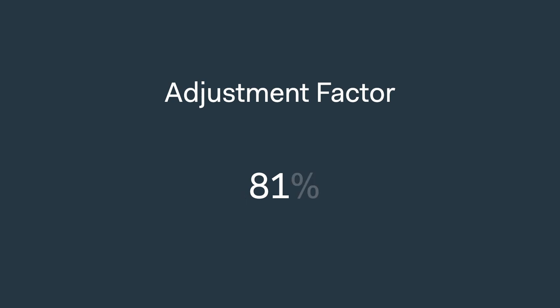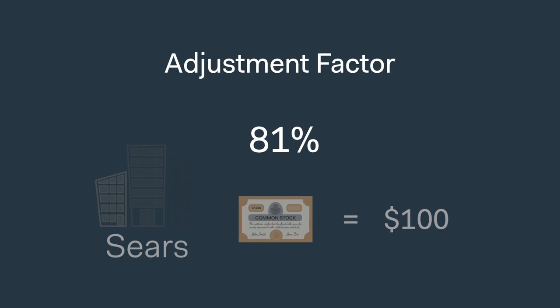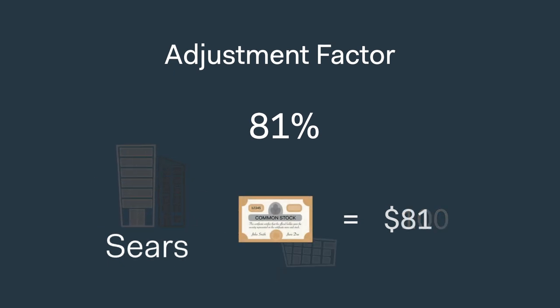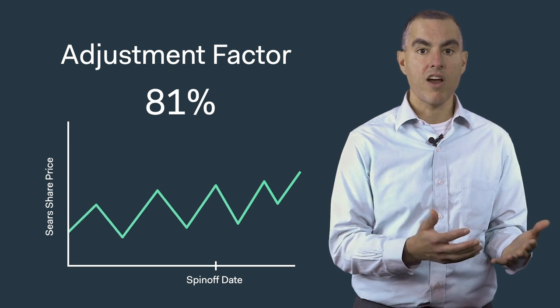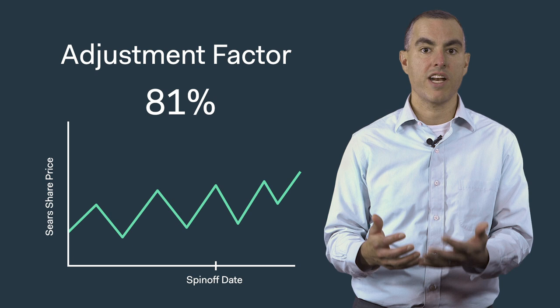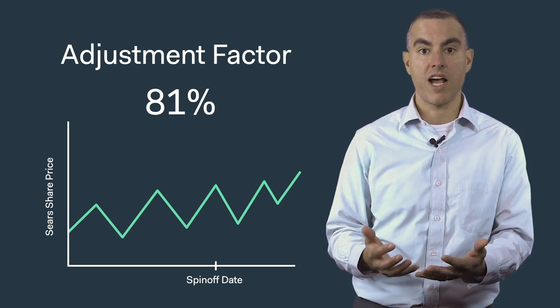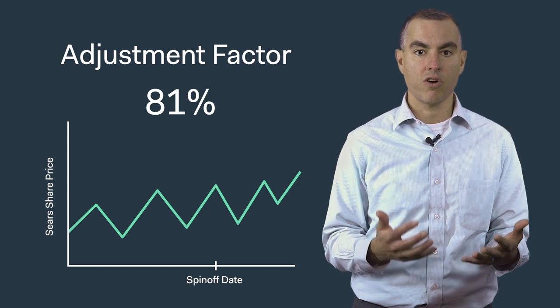Next, we will discuss spin-offs. When a spin-off takes place, such as the Sears spin-off of Land's End that we discussed in our earlier video, the company will typically report an adjustment factor. Here we see how this adjustment factor is reported in the Bloomberg terminal. This adjustment factor represents the value expected to remain in the company that originates the spin-off. If the adjustment factor for this spin-off is 0.81, or 81%, then assuming hypothetically that Sears was worth $100 before the spin-off, it's expected to be worth approximately $81 after the spin-off. Using this adjustment factor, we can adjust the price history of Sears prior to the spin-off to evaluate the share price on an apples-to-apples basis before and after this corporate action.